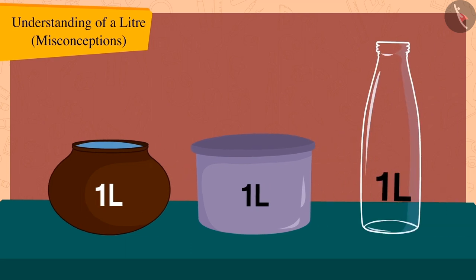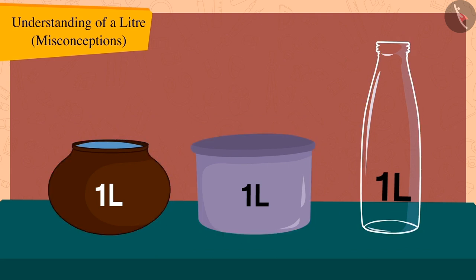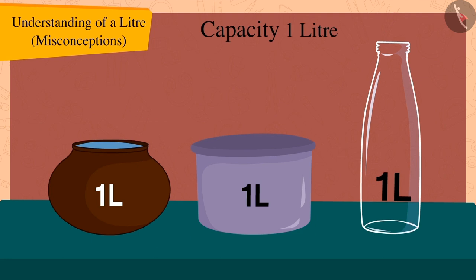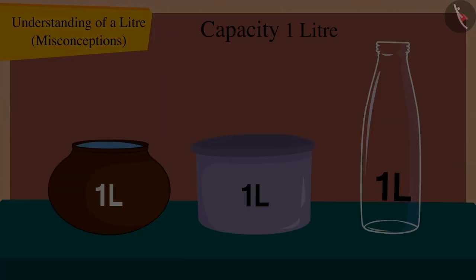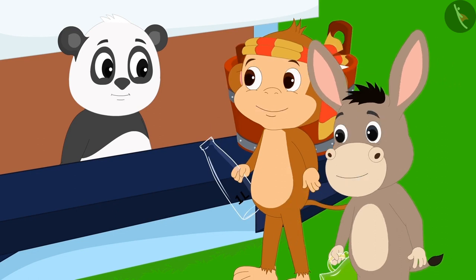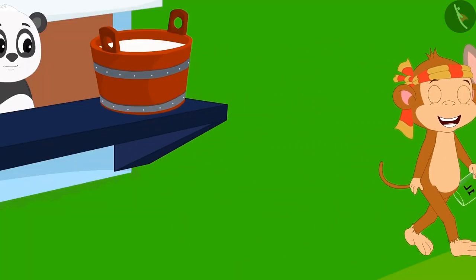Children, you have seen how even though these utensils are different and their shapes are also different, their capacity is the same as one litre. Bholla and Babban said thank you to Golu and happily returned to their homes taking their bottle and jug.